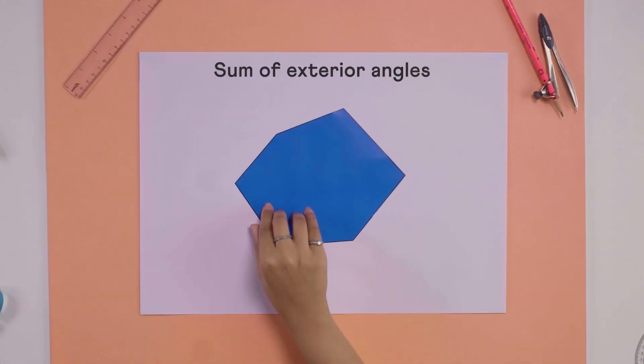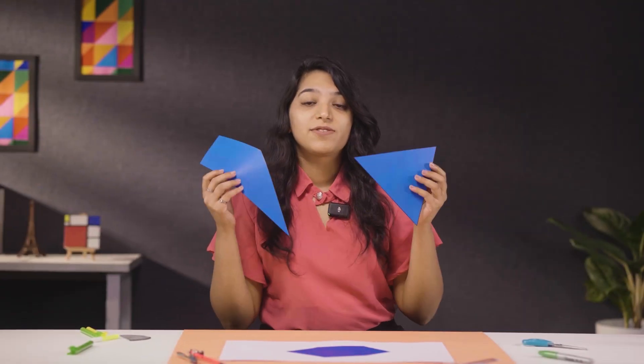Take any polygon. The sum of its exterior angles is always 360 degrees. Why is that? Let's explore this with a few polygons and understand why this happened.